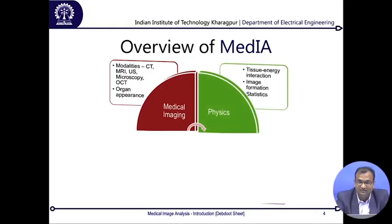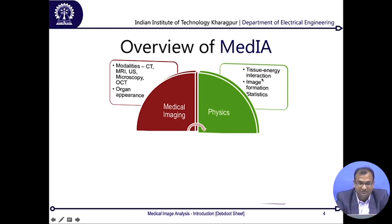The second sector is understanding the physics, which is really important. Why water appears darker in ultrasound and brighter in MR, whereas fat appears brighter in both, requires understanding tissue-energy interactions. Image formation and its statistics are also important: ultrasound is a specular modality with a lot of jitter, noise, and uncertainty around intensities. MR will not have that problem but has lower resolution. As we go into detailed physics and instrumentation, you will get a clearer understanding of resolution and how operating conditions affect image formation.